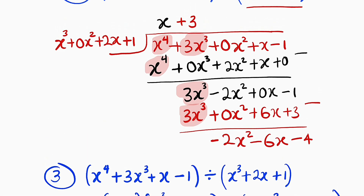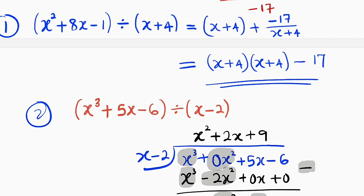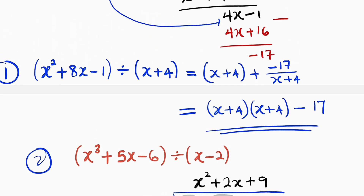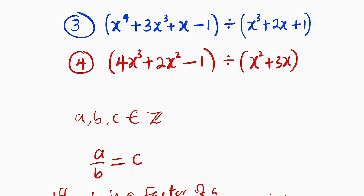And this is all I have for you today. You can check the last problem for you to try, which is 4x to the power of 3 plus 2x squared minus 1 divided by x squared plus 3x. Thank you for watching. Do like, comment, and share. Bye-bye.